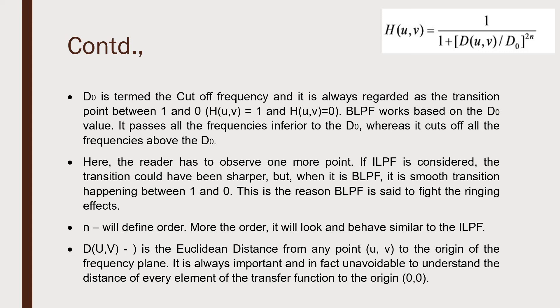D(u,v) is the Euclidean distance from any point (u,v) to the origin of the frequency plane. It is very important and unavoidable to understand the distance of each element of the transfer function to the origin (0,0). This is very important.